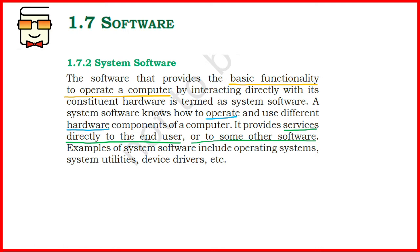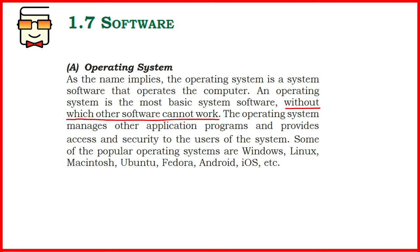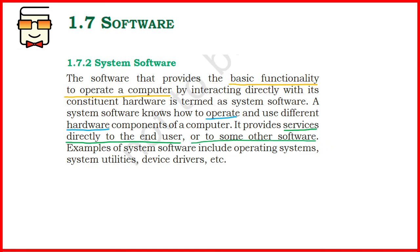What are some examples of system software? The most common and important system software is the operating system — like Windows, Linux, and Ubuntu. These are the softwares that start up a computer. If you do not have an OS installed in your system, your system will not perform any function, and you'll not be able to make use of any other software or functionality of any hardware. Apart from the operating system, two other important examples are system utilities and device drivers.